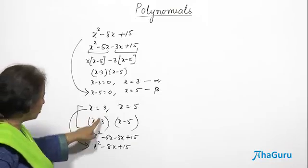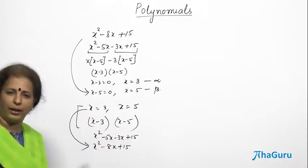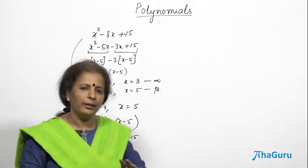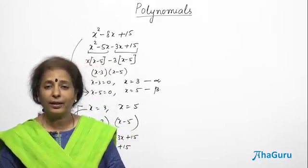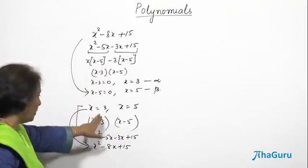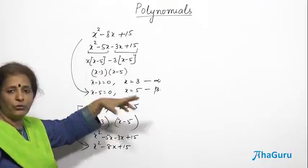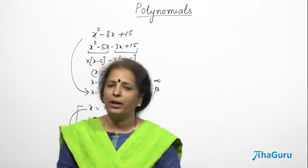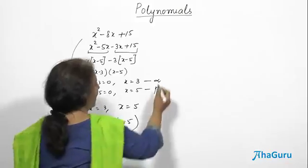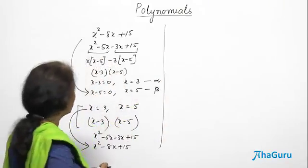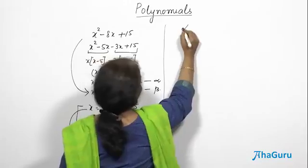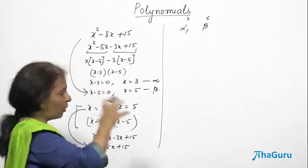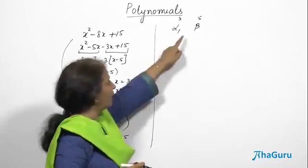It's not a big deal — I know the roots, I can write the factors, multiply and get the answer. But should I always multiply to get the answer? Is there a shortcut? Now x equals 3 and x equals 5 are the roots. We generally call them alpha and beta. So let us take a generalized quadratic polynomial whose roots are alpha and beta — think of 3 and 5 as numbers, but we will work with alpha and beta.